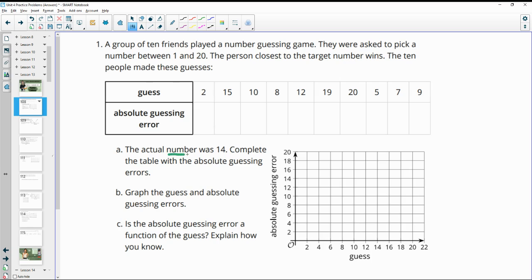The actual number is 14. Complete the table with the absolute guessing error, and you do this by doing the absolute value of the guess minus the error, or just how far away is the guess from the error. You're not going to use any negative numbers. So 2 is 12 away from 14.